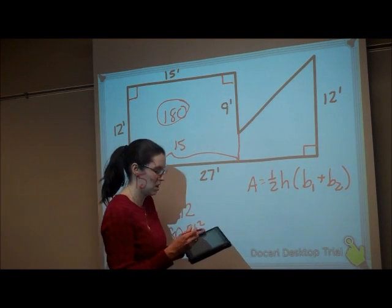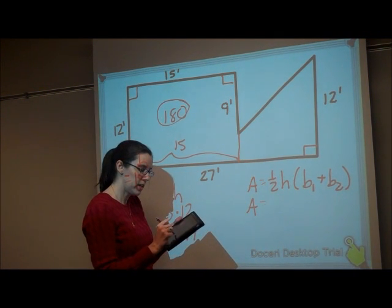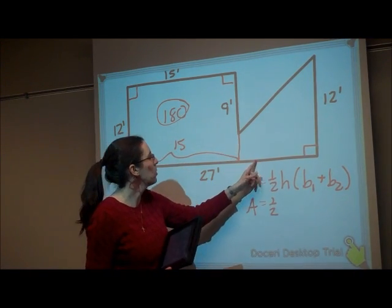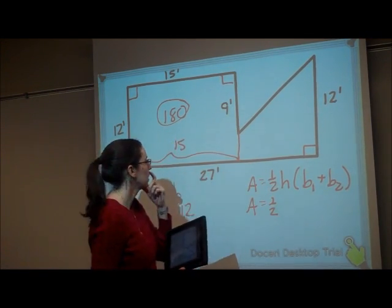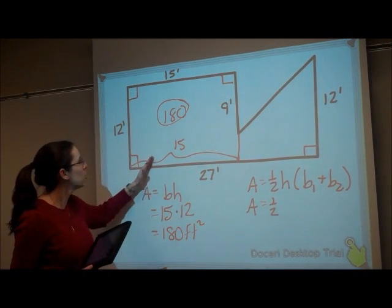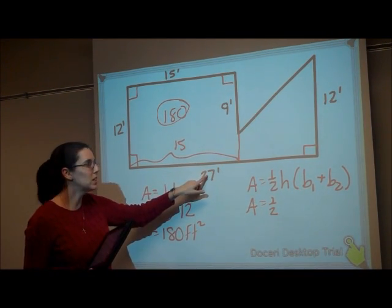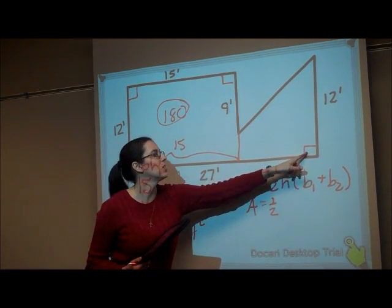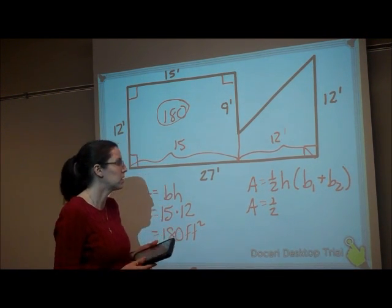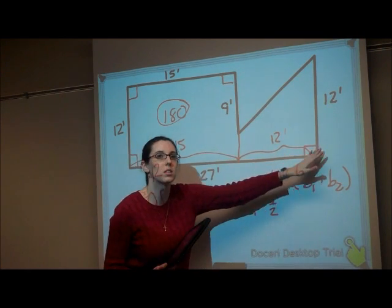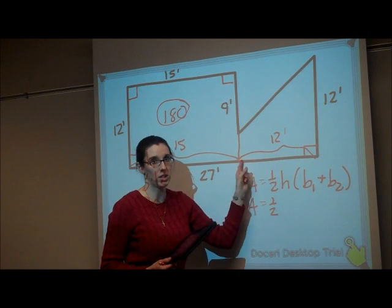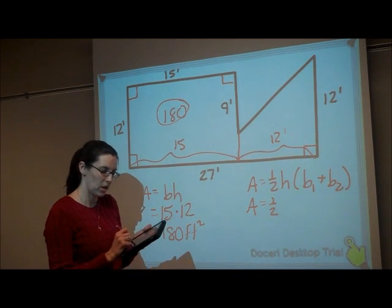Now, going to my trapezoid, I need the height between the parallel sides. Well, that would be this side. So now we have to go back to the 27. This is part of the 27. Here we took out 15 from this 27, so that leaves this part to be 12 feet because the 15 plus the 12 would give me the 27. So that means the height of my trapezoid is 12.